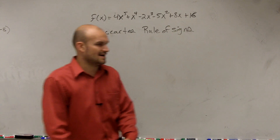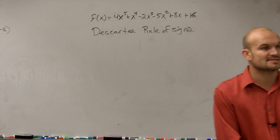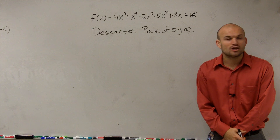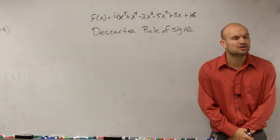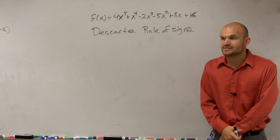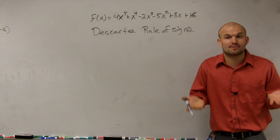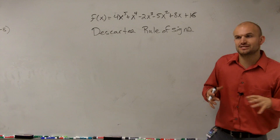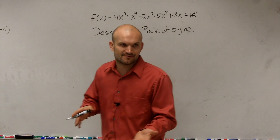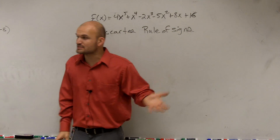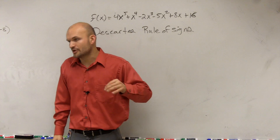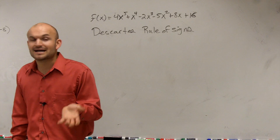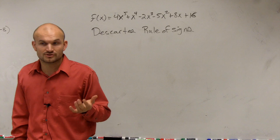So Descartes' Rule of Signs — what it says is it doesn't tell you what the possible zeros are. All it says is it helps tell you how many zeros you have. But it's not just talking about rational; it's only going to be dealing with real. And it's going to be dealing with positive and negative. So we can use the rational zero test to tell us how many rational numbers we have, and we can use Descartes' Rule of Signs to tell us how many positive and negative real zeros we have.